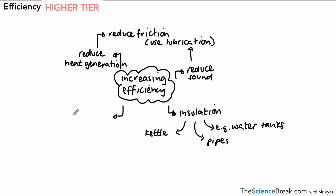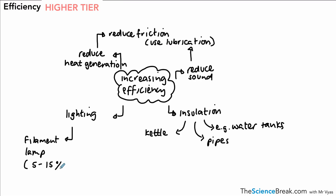Something else is lighting. We can increase the efficiency of lighting by switching bulb types. Filament bulbs rely on wires being heated to high temperatures to emit light, but they tend to be only about 5 to 15 percent efficient — most of the energy is transferred as heat to the surroundings. If we use an LED bulb, these tend to be much higher in efficiency — around 80 to 90 percent, sometimes even a little bit higher.